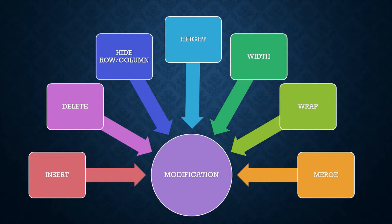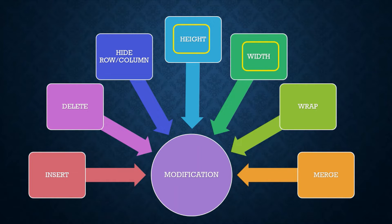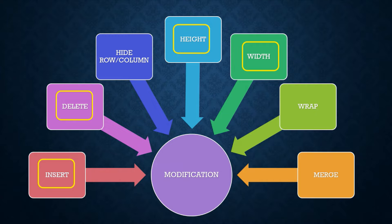As we have already studied about the modifications and what are the types of modifications. In the last videos, we have seen how to change the height, width, how to insert row and column and how to delete row and column. So in today's video, we will start with the next type of modification — that is how to hide row and column.